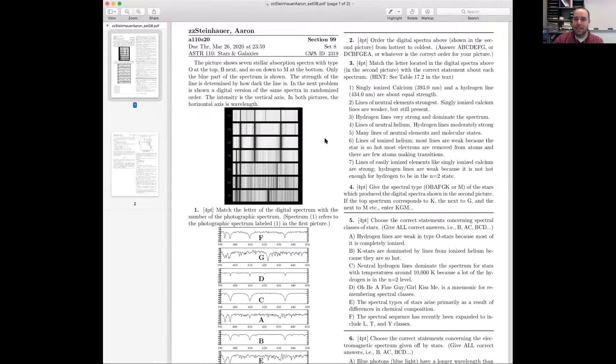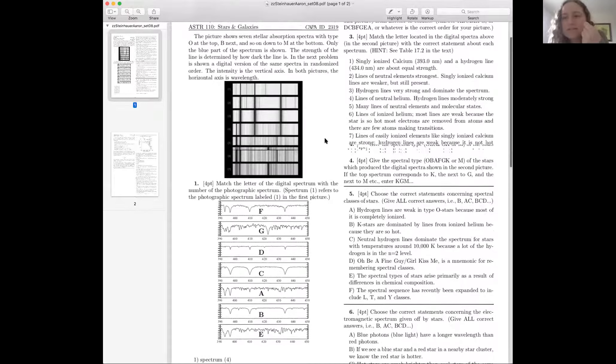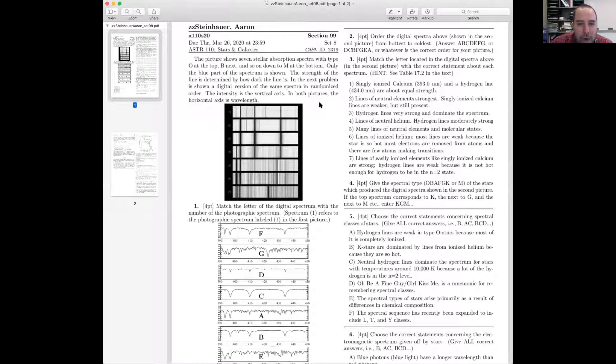Here's mine. The PDF version. So number two is, order the digital spectra above from hottest to coldest. So you already figured out which was which, right? It took me like a whole hour.